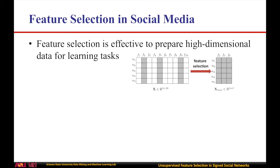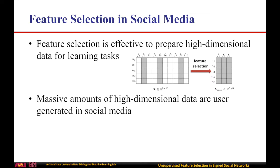Feature selection is effective to prepare high-dimensional data for many learning tasks by selecting a subset of features of high quality. Nowadays, massive amounts of high-dimensional data such as texts, images, and videos are user-generated and quickly disseminated in social media.